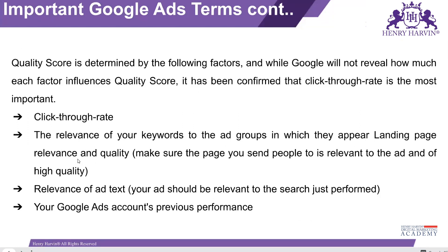We can see the quality score here and what factors imply it. For a good quality score, the click-through rate should be good. For that, your ad should be relevant — like we have seen from MailChimp, they show 'Contact Us', 'Get Free Email Templates', 'Get Email Marketing Software', or 'Free Sign Up'. Using such ad copies, you can increase the click-through rate, and if your CTR is good, the quality score will definitely increase. Relevance of your keyword to the ad group and the landing page matters.